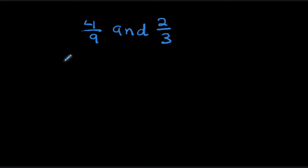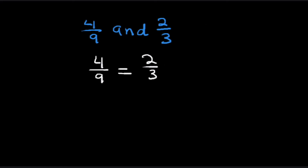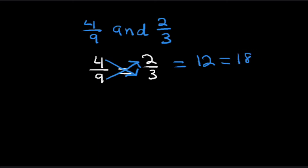Now we're going to determine whether four ninths and two thirds are proportional by using cross multiplication. We have four ninths equals two thirds. Four times three is twelve and nine times two is eighteen. Twelve does not equal eighteen, therefore four ninths and two thirds are not in proportion — they are not proportional.